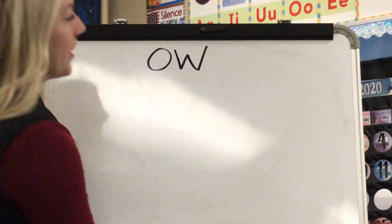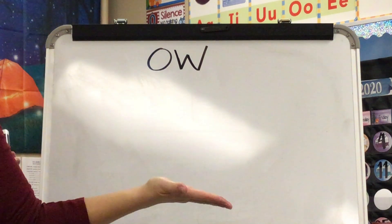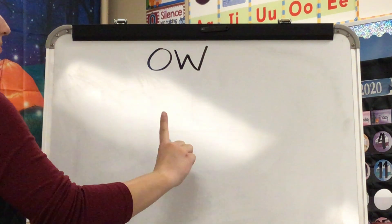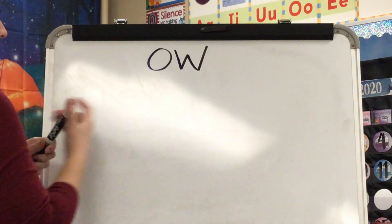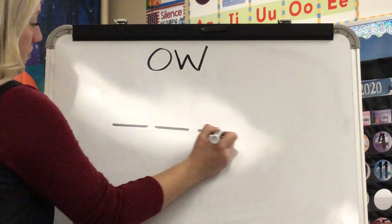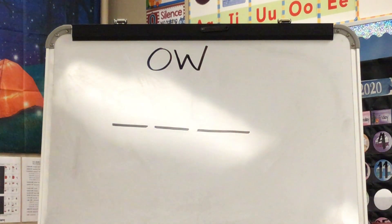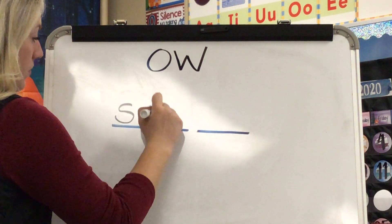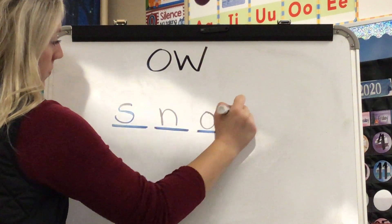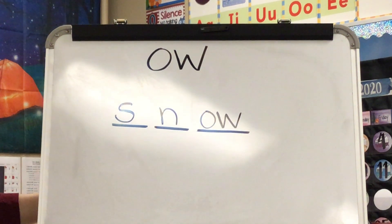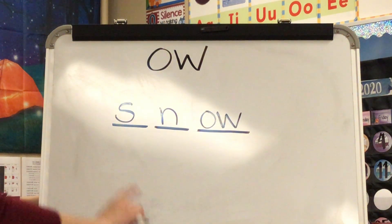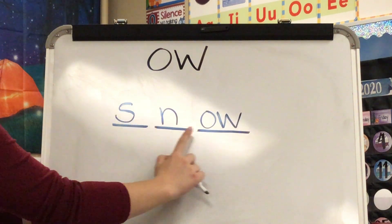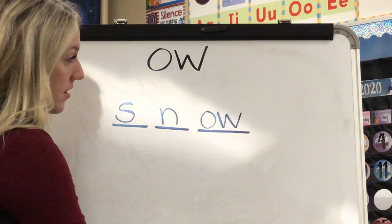Our next word is snow. What word? Snow. Stretch snow: S-n-o. Write the sound spellings you hear in snow. Check. Spell snow: S-N-O-W. Word? Snow. Yes, snow.